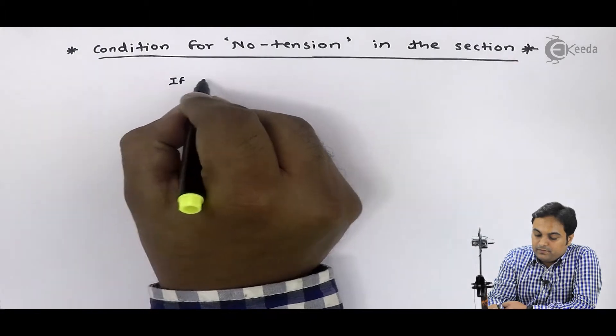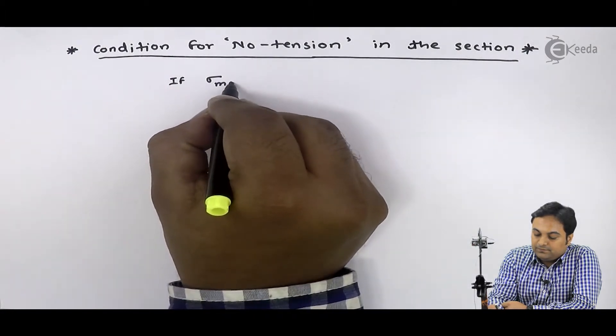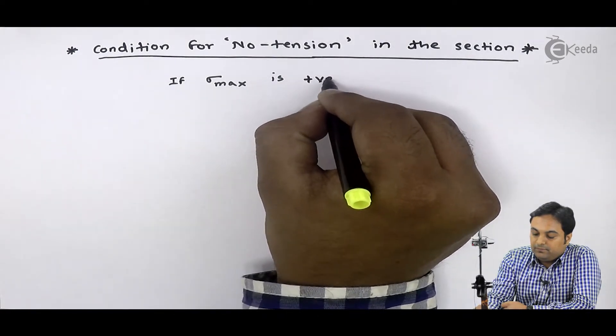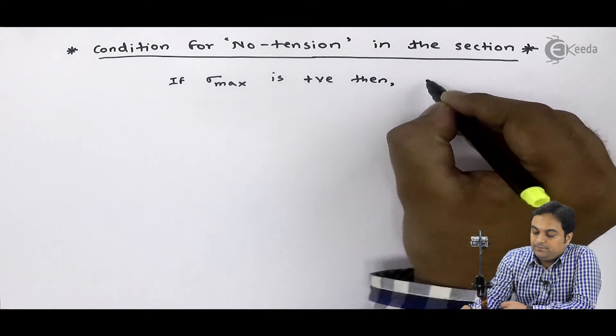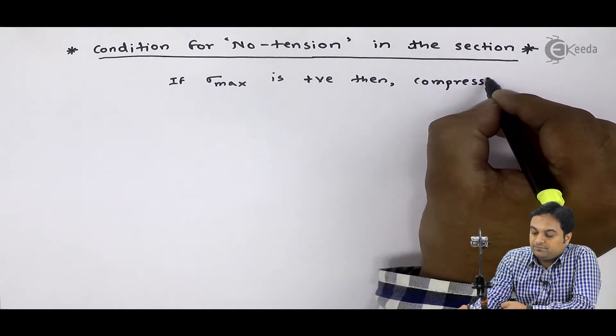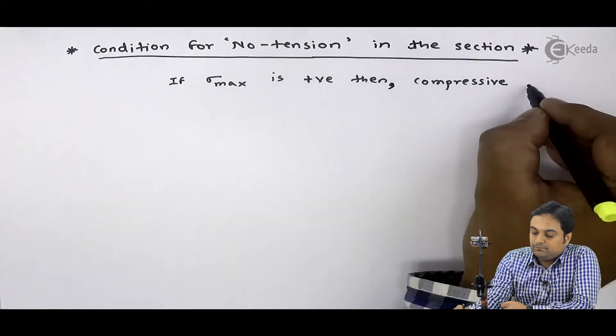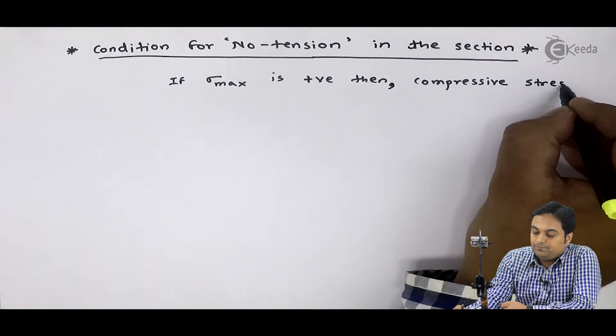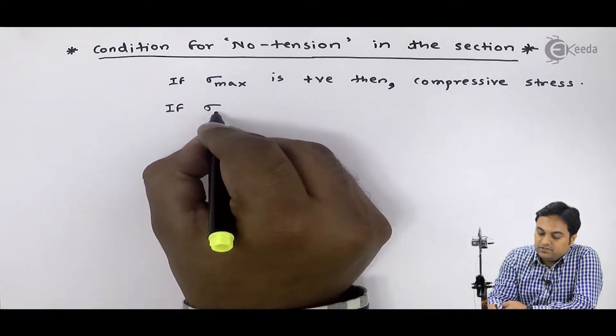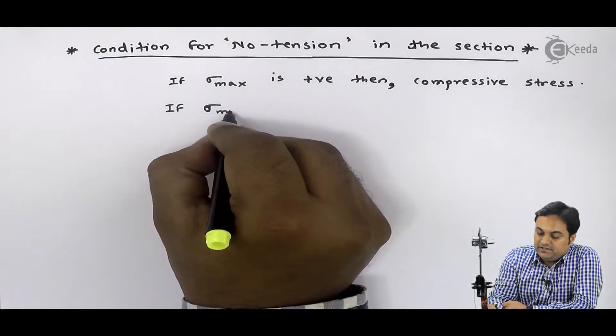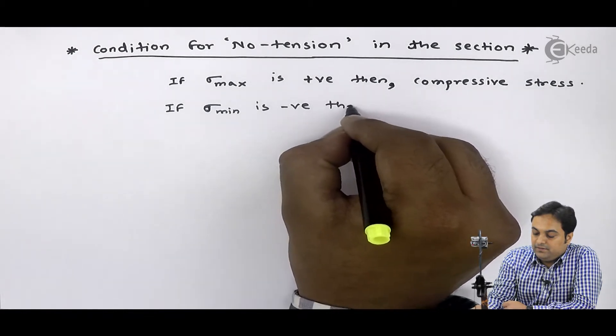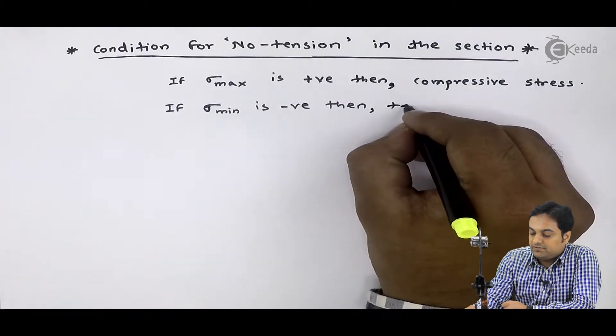That is, if sigma max is positive, then it is compressive stress. Next, we have seen if sigma min, that is minimum stress, is negative, then it is tensile stress.